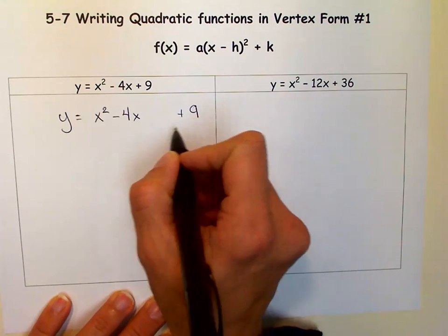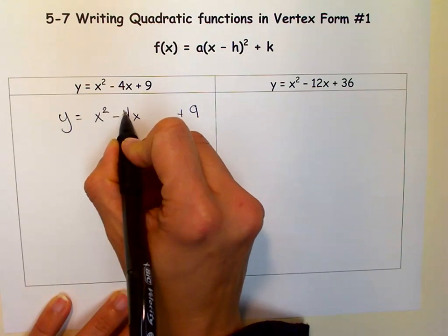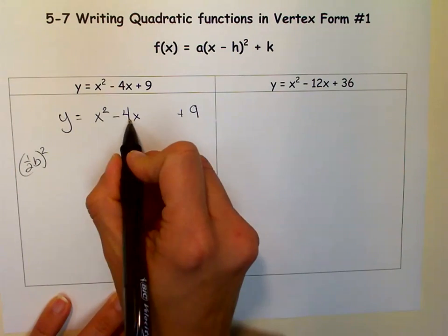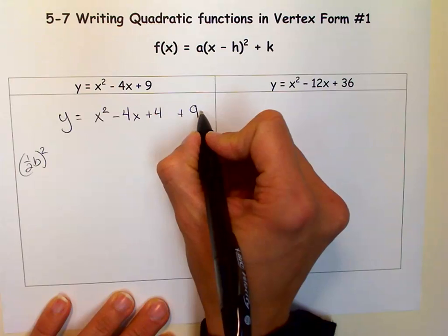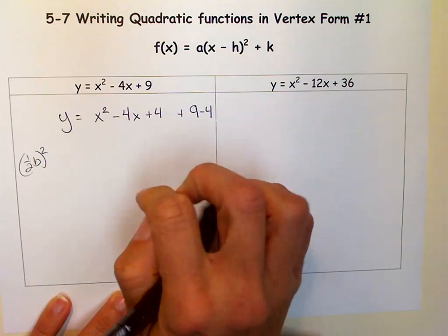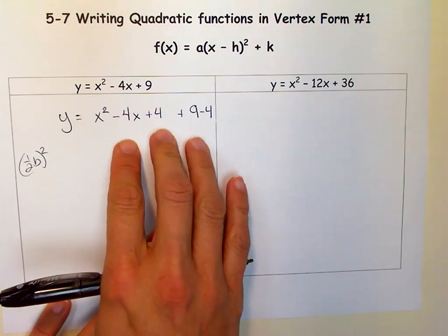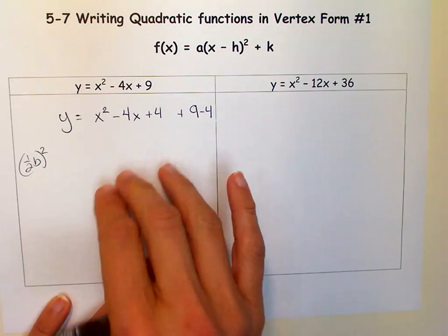So we move it just a little bit, then we take half of b, this is b, so half of b and square it, so that's 2 squared which is 4, and we add it here, but subtract it here, and that's important. You don't want to change the equation at all, we're just changing how it looks. So if we add 4 and subtract 4, we're really adding 0, so it's the same exact equation.